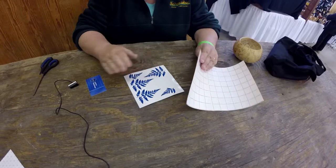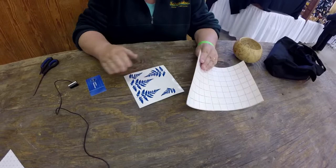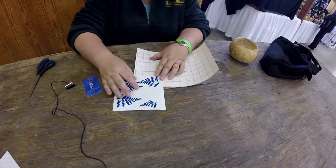This video is going to show you how to use the pre-masked material with the masking shapes. First, what you want to do is take your masking shape and just kind of lay it on here.